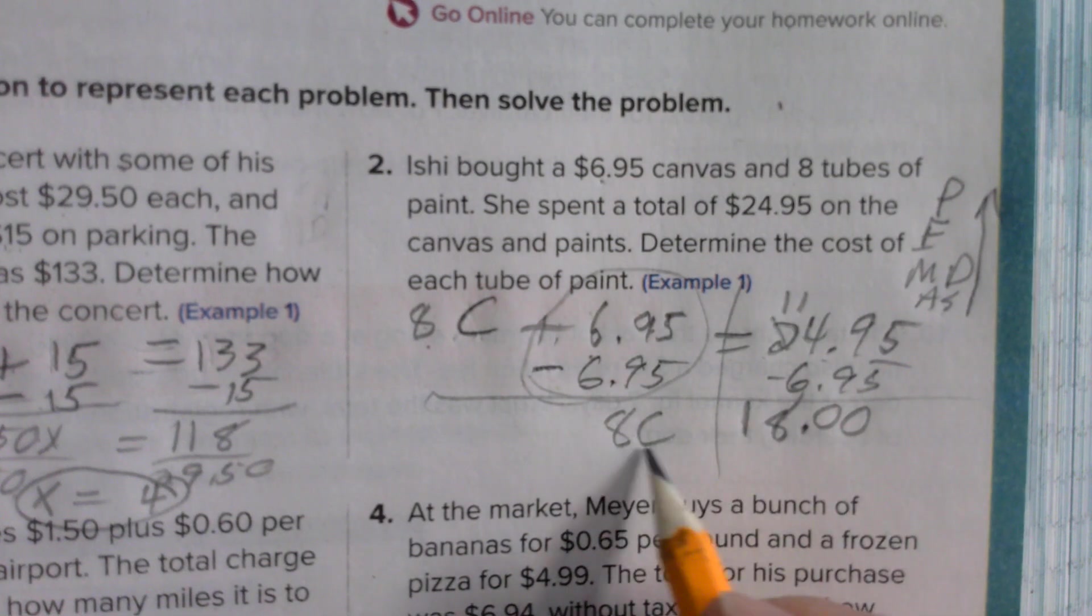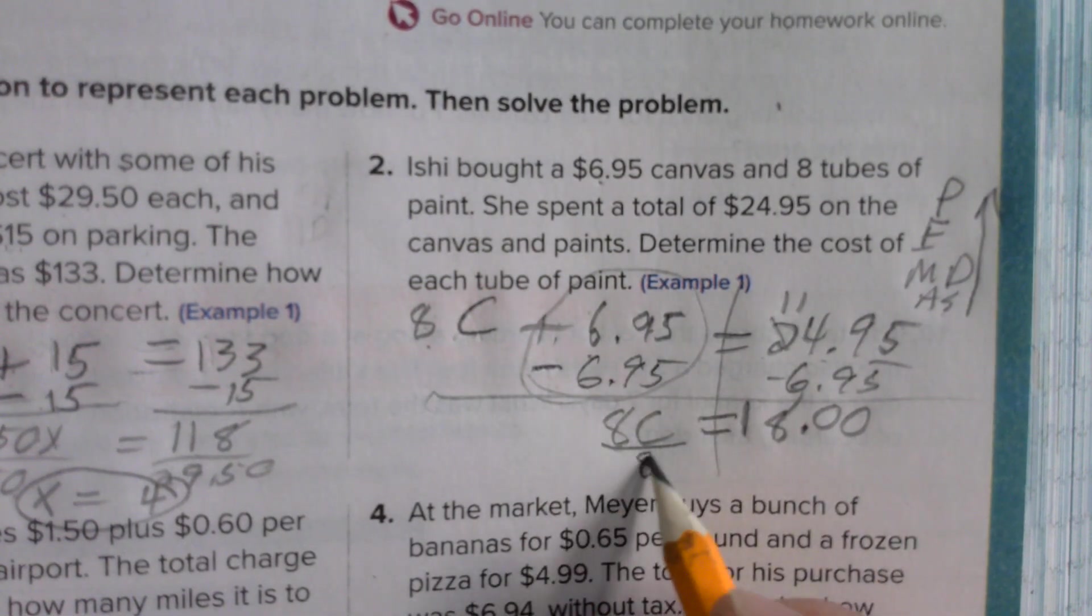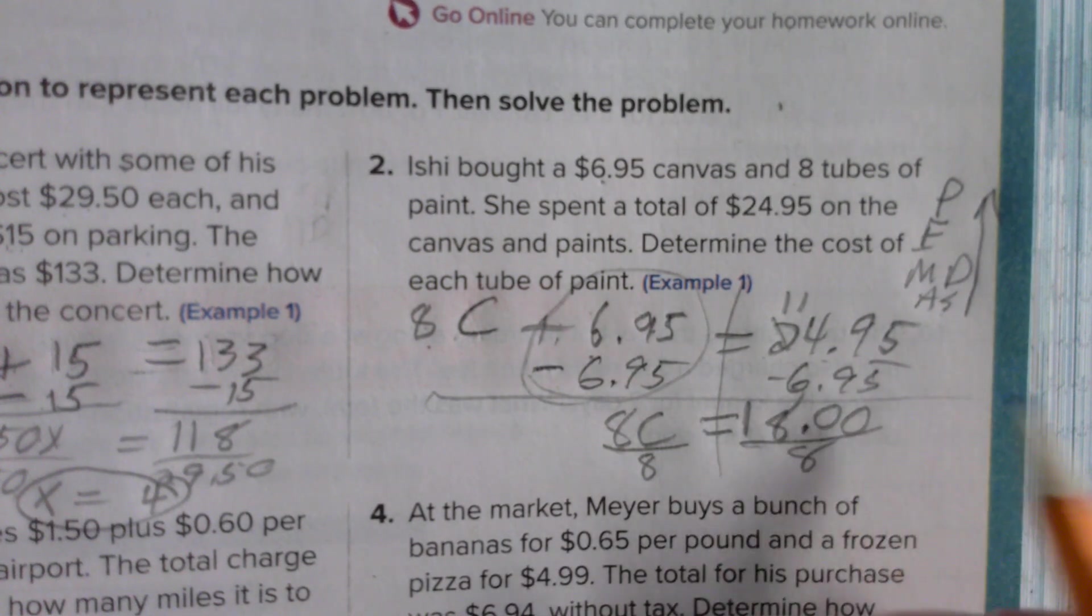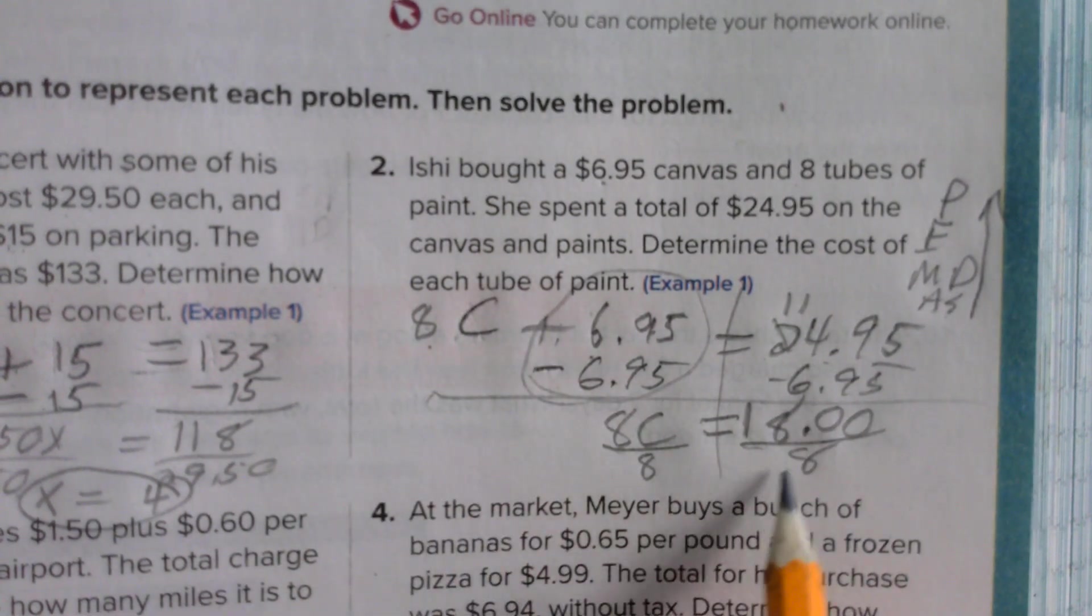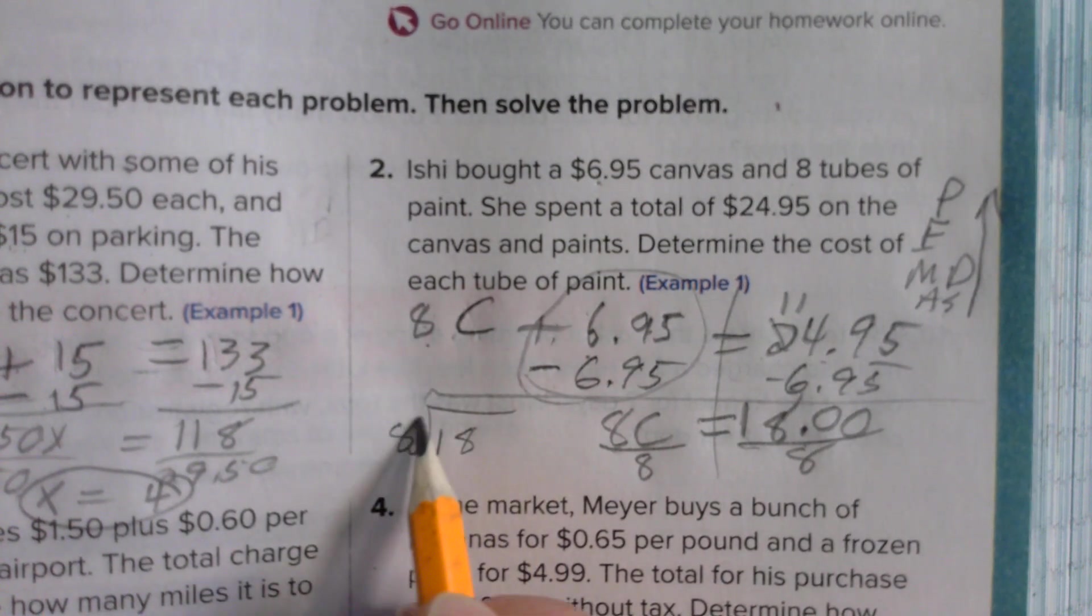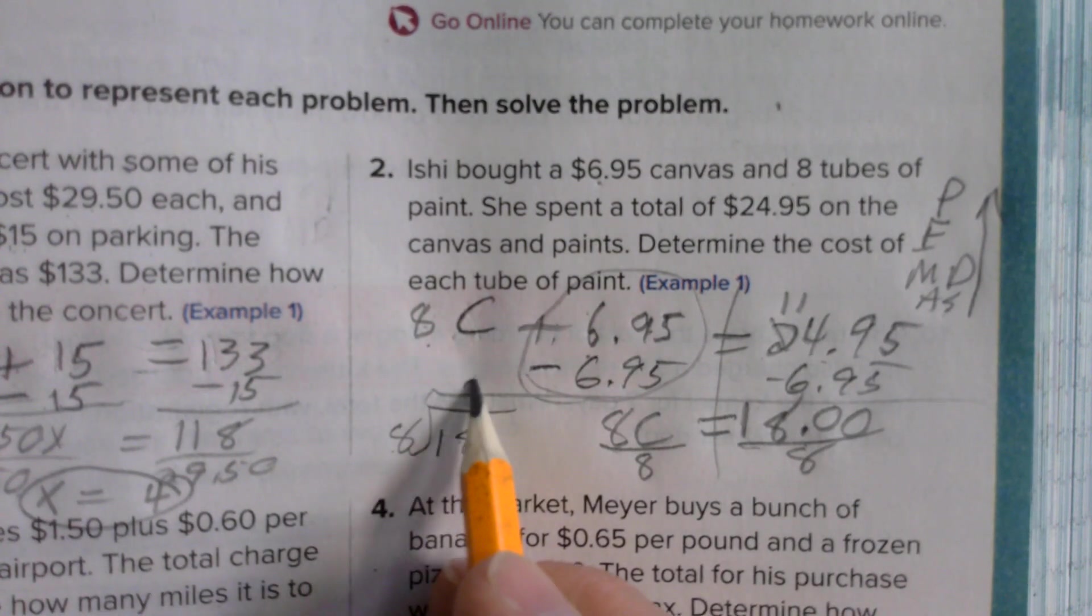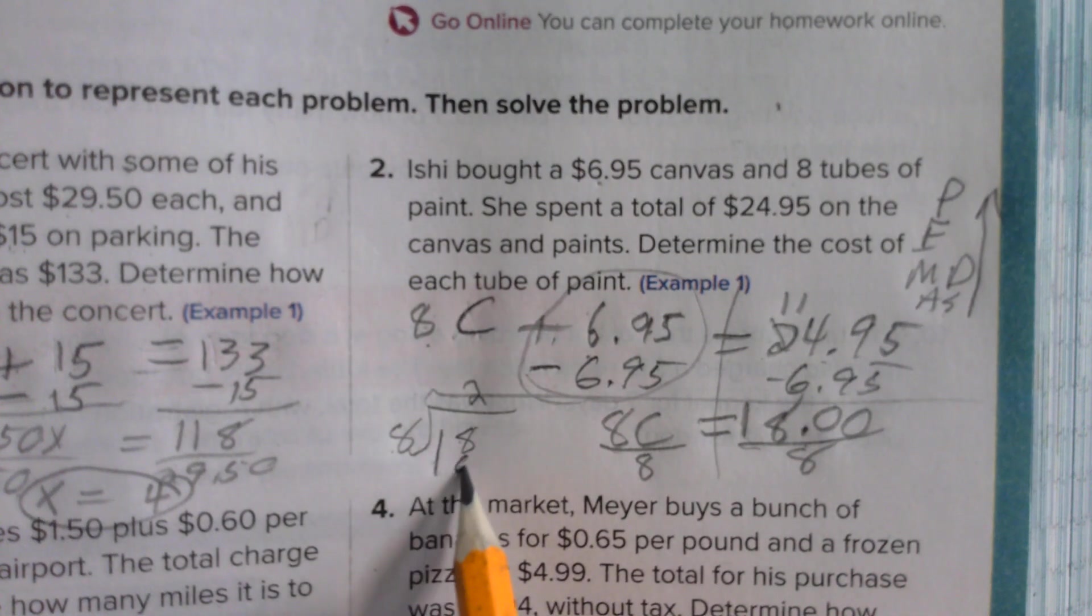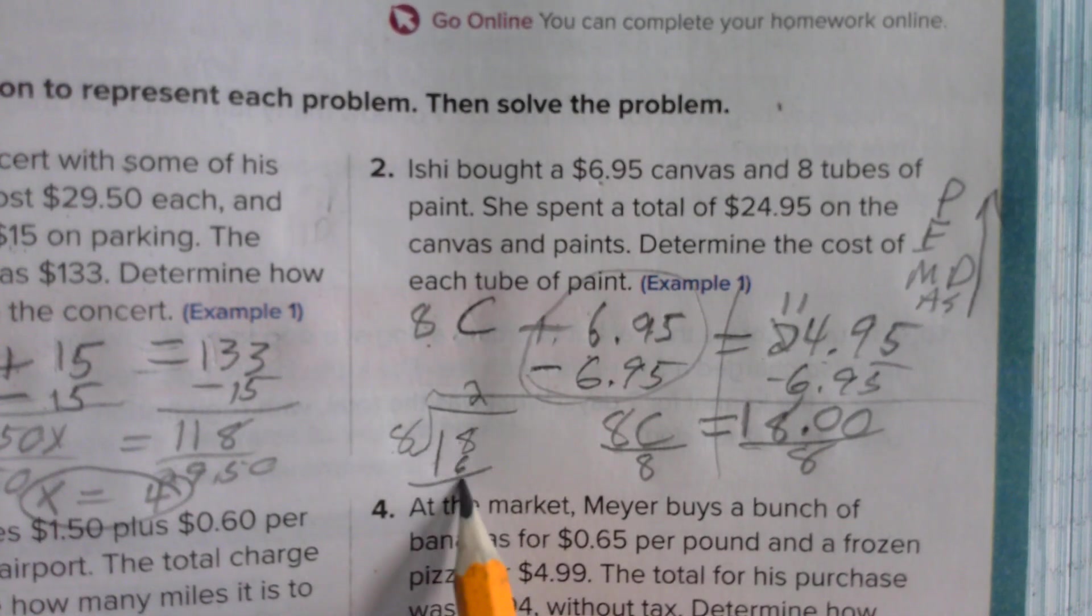Now I divide both sides by 8. And again, you've got to be able to do that. 18 divided by 8. 18 on the inside, 8 on the outside. 8 goes into 18 two times. 2 times 8 is 16. 18 minus 16 is 2.